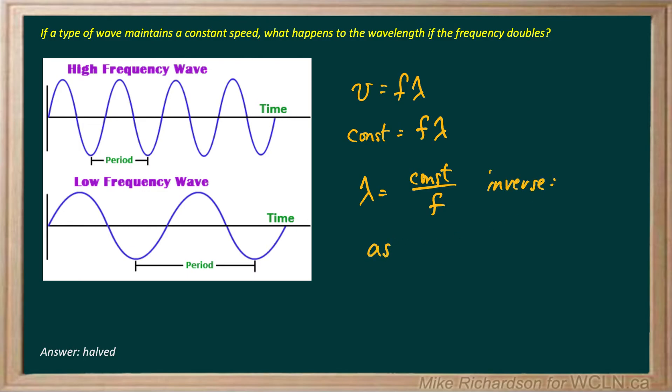In other words, as frequency goes up, wavelength goes down. So if I double the frequency as suggested, the bottom becomes 2, the wavelength will have to halve. So lambda will be halved.